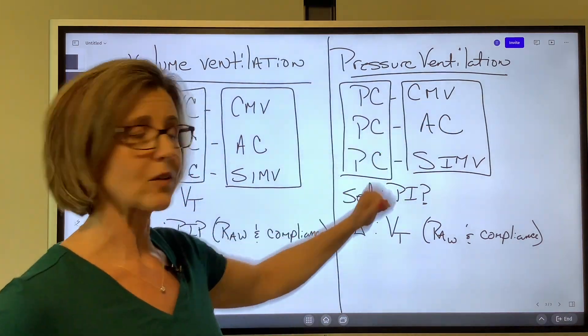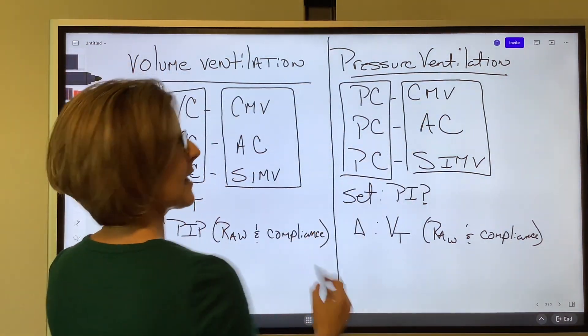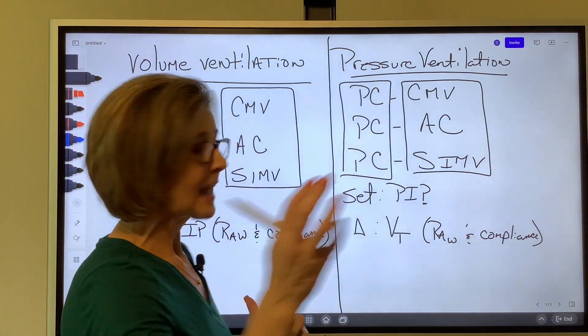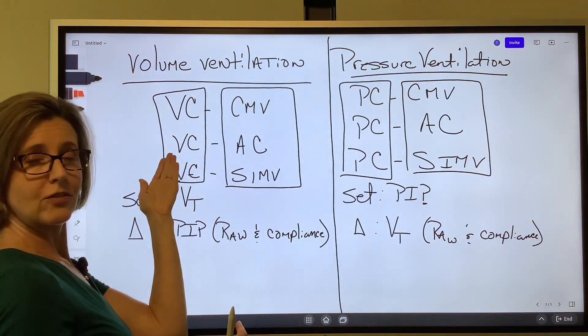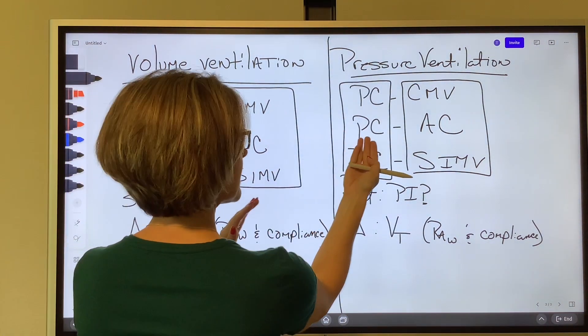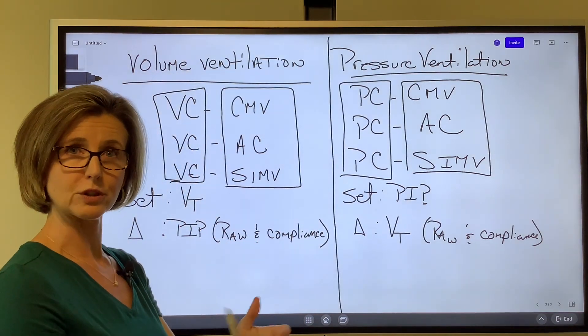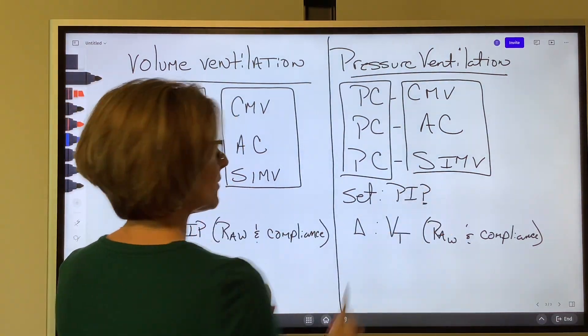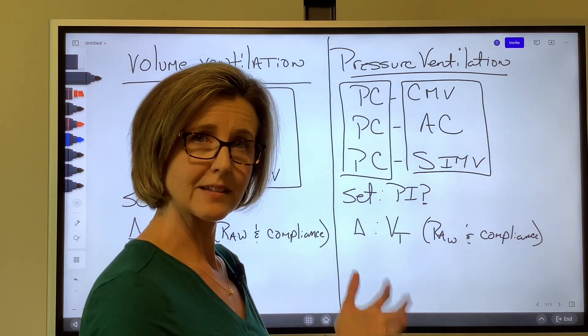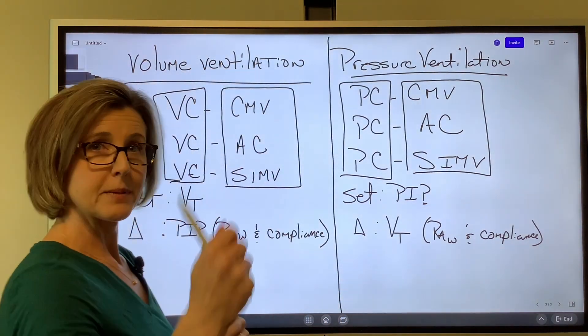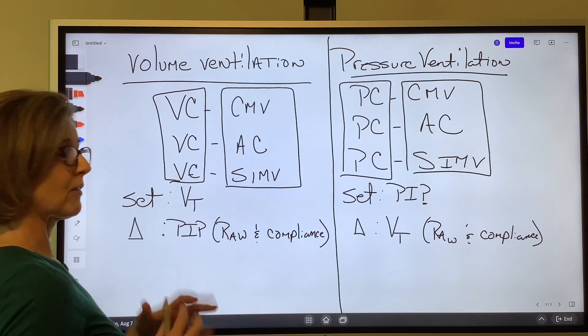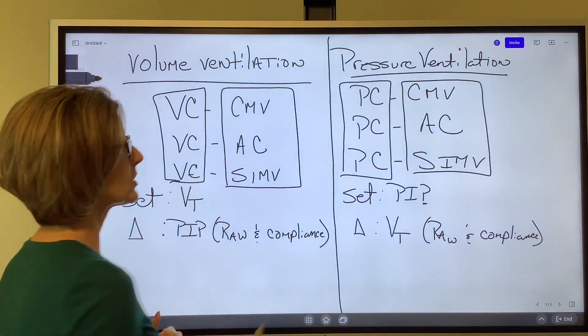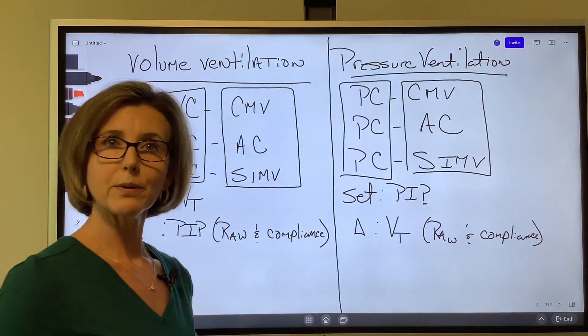But CMV, the machine does all the work. AC, the patient initiates, and they will either get the set tidal volume if it's volume control or the set pressure if it's pressure control. And in SIMV, we allow the patient to breathe spontaneously around the set breaths. But those set breaths may have set tidal volumes in volume ventilation or set pressure in pressure ventilation.